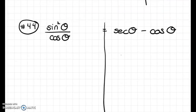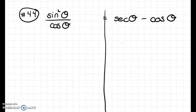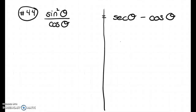I recognize that sin²β + cos²β is a Pythagorean identity equaling one. The proof is complete!